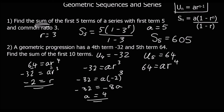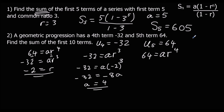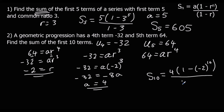So we know a and r now. We're going to use the sum formula to find S10, the sum of the first 10 terms. The sum of 10 terms is a·(1 - r^n) / (1 - r), which is 4·(1 - (-2)^10) / (1 - (-2)). Typing that into the calculator gives us -1,364.